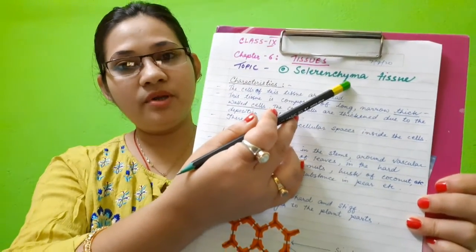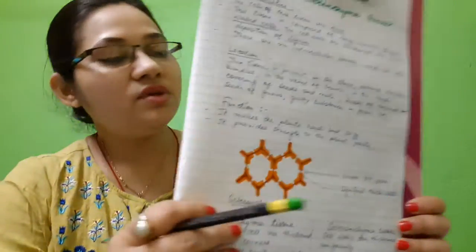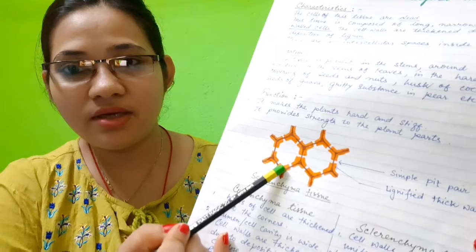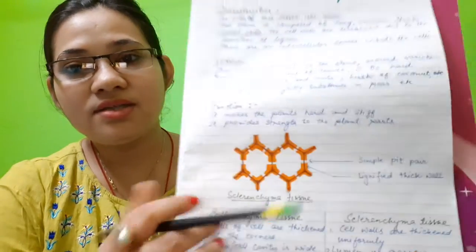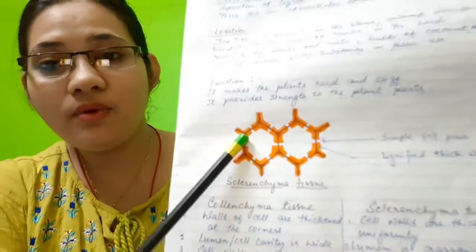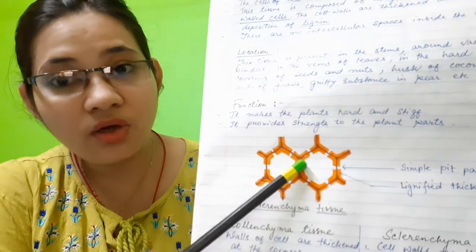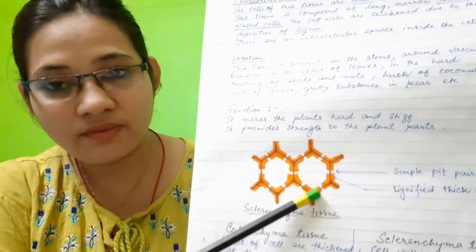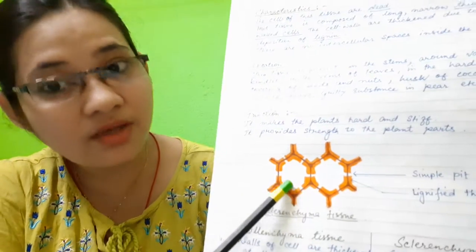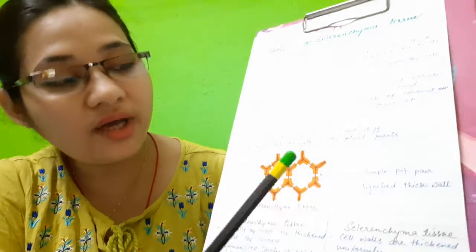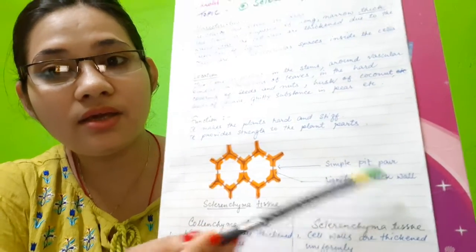Let us see the third type of simple permanent tissue, that is sclerenchyma. If you compare the diagram of collenchyma and sclerenchyma, you will see that in the case of sclerenchyma, the cell wall of the cells is thickened — not at the corners, but uniformly throughout. This thickening of the cell wall is because of the deposition of lignin. Lignin is a type of carbohydrate, so they are known as lignified thick walls.